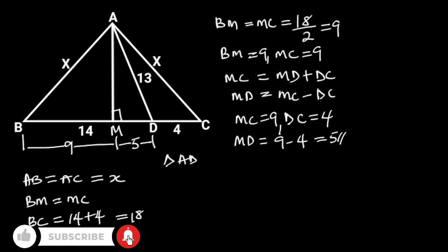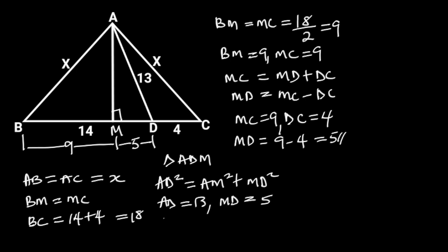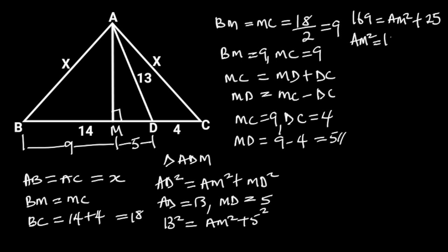Next, let's consider triangle ADM. Triangle ADM is a right triangle. From Pythagoras' theorem, AD squared is equal to AM squared plus MD squared. AD is equal to 13 and MD is equal to 5. Substituting these values gives us 13 squared is equal to AM squared plus 5 squared. 13 squared is equal to 169, and 5 squared is equal to 25. Making AM squared the subject, AM squared is equal to 169 minus 25, which is equal to 144. Taking the square root of both sides gives us AM is equal to 12.